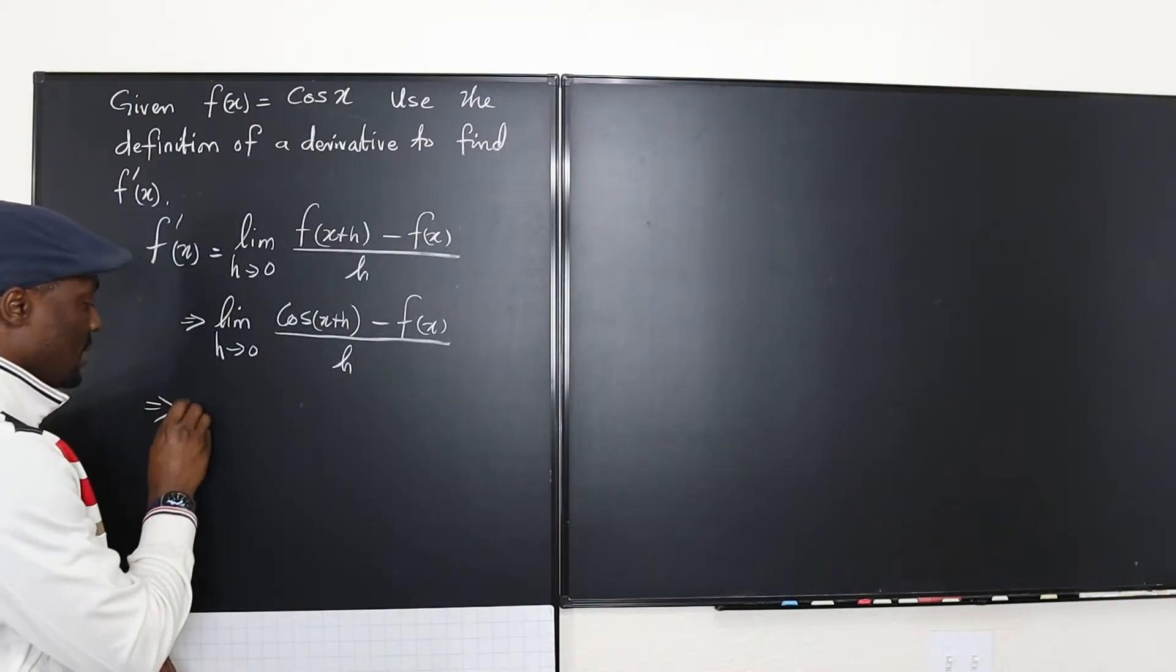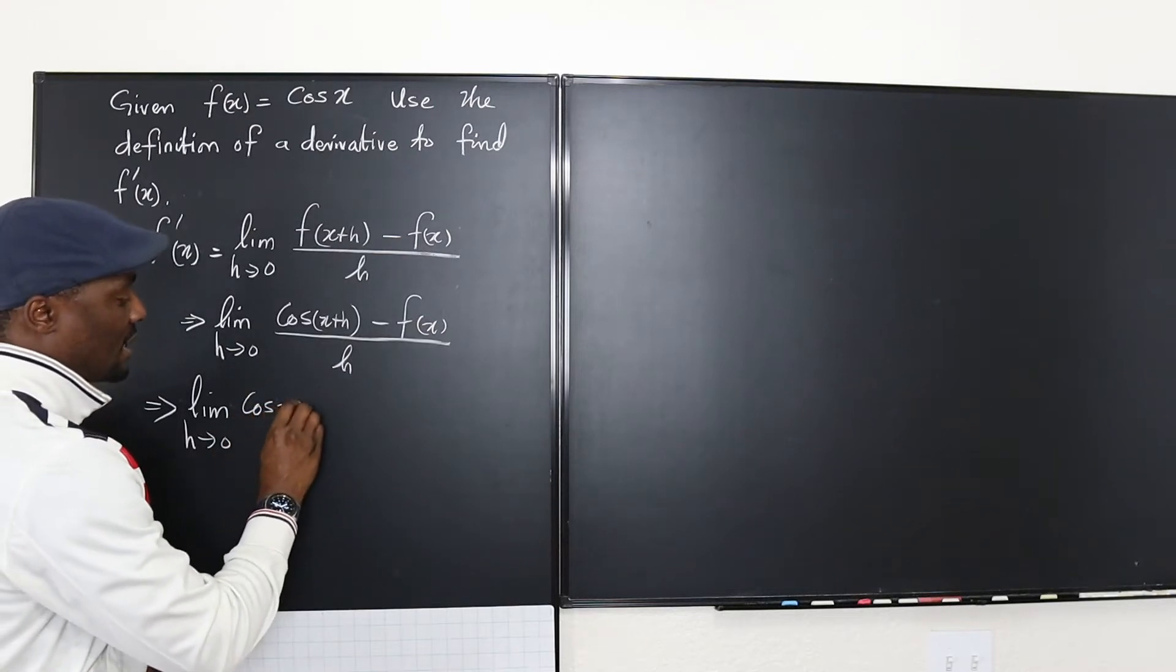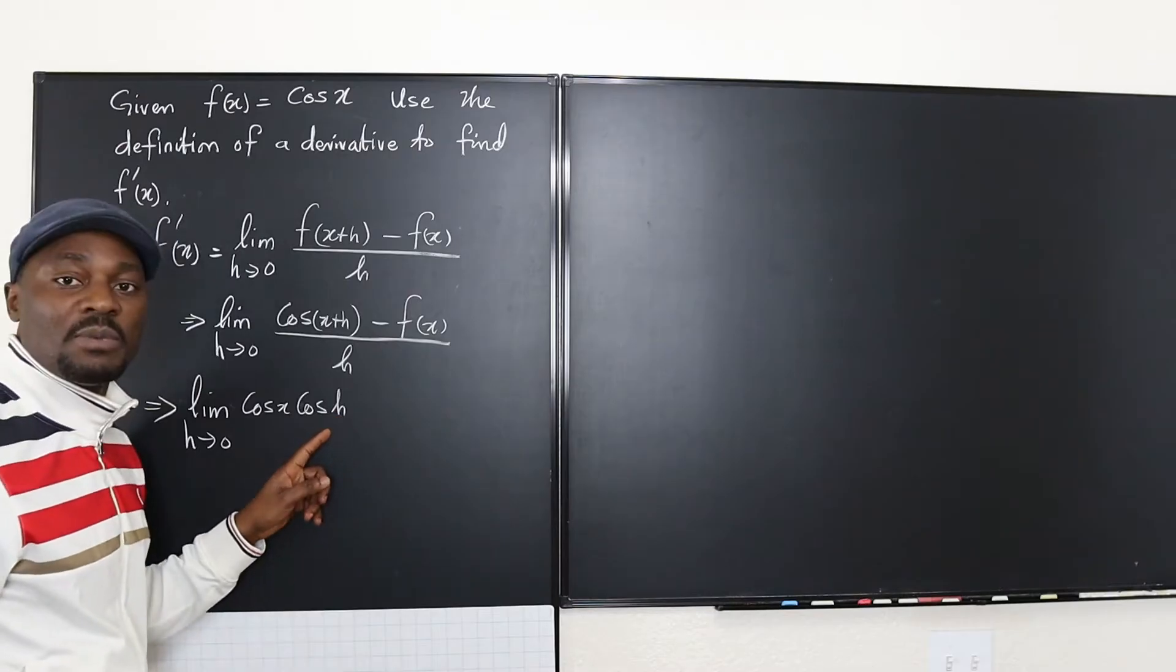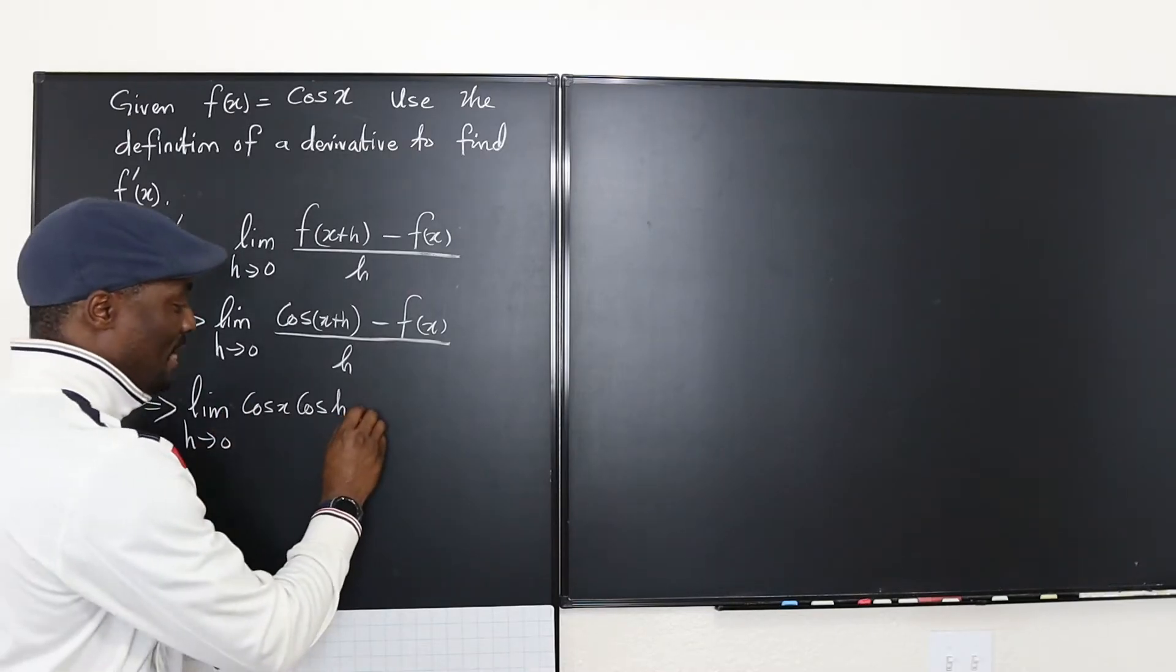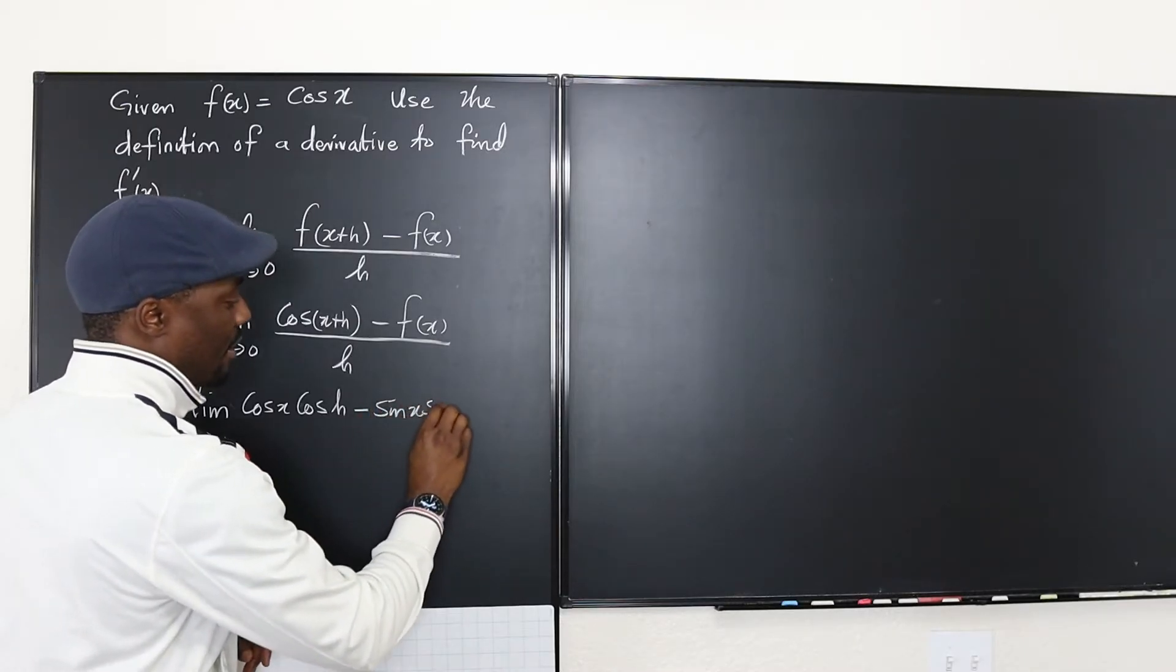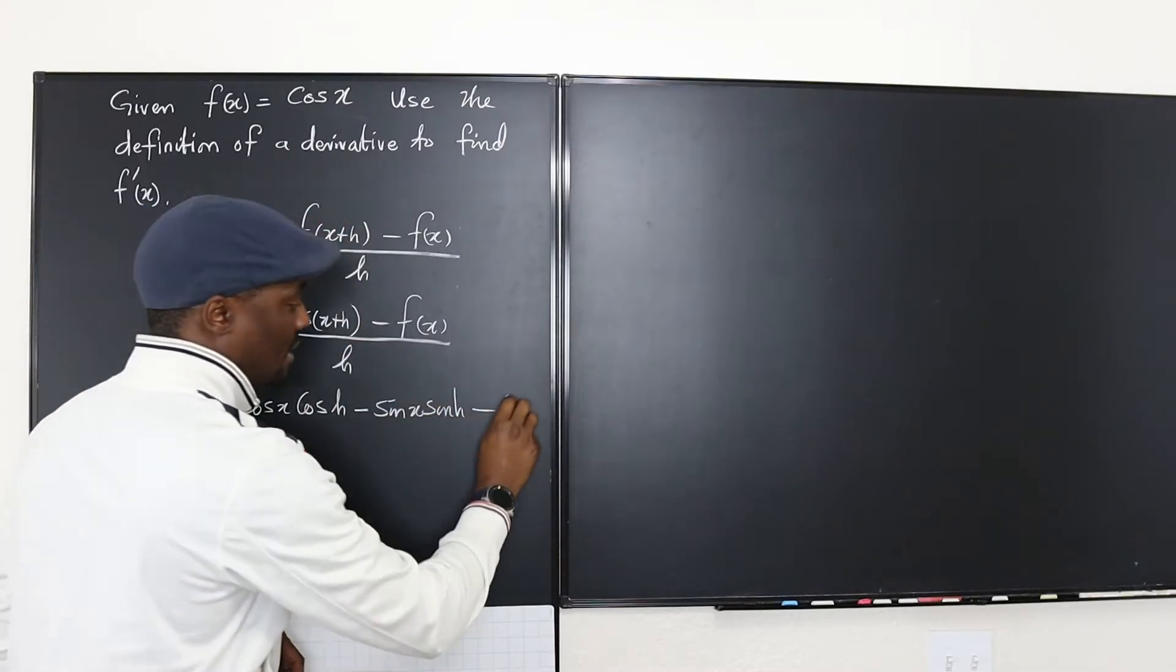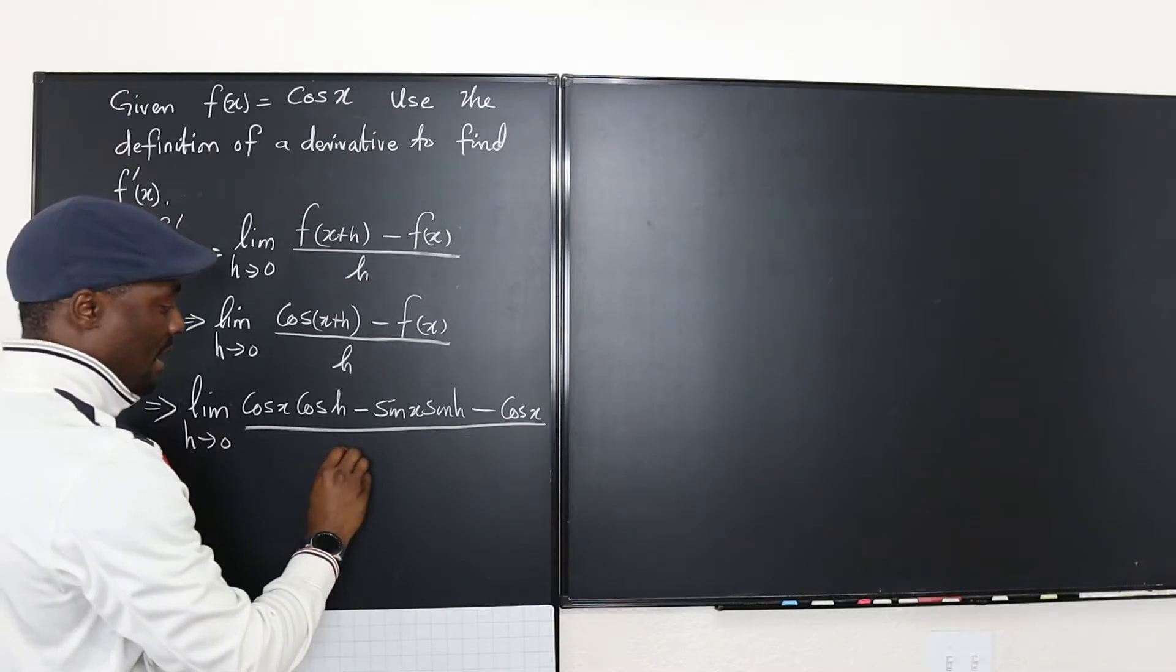So this means the limit as h goes to zero of cosine x cosine h. Well this is not hyperbolic cosine I'm just using h. Okay so let's do that. Minus sine x sine h minus f of x which is cosine x.